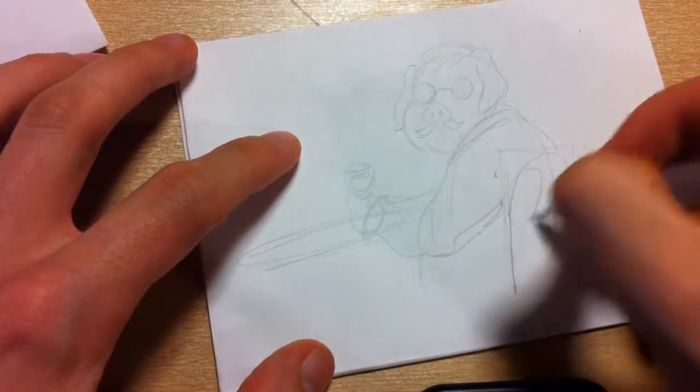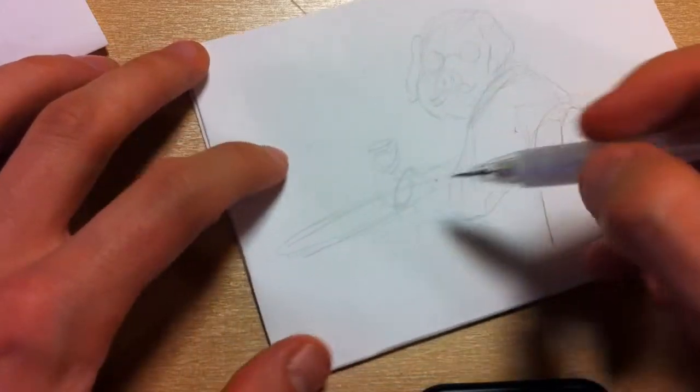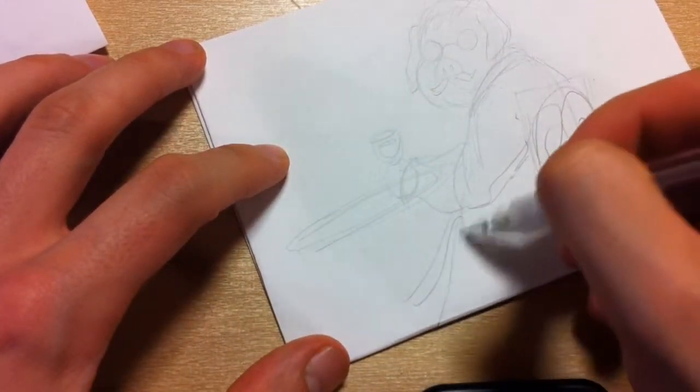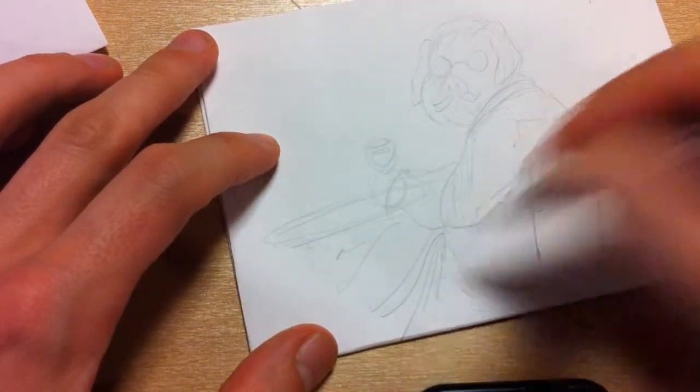Draw that round chair, round like this, round like that. Now he's sitting with a tablecloth, so put a few swoopy lines there.